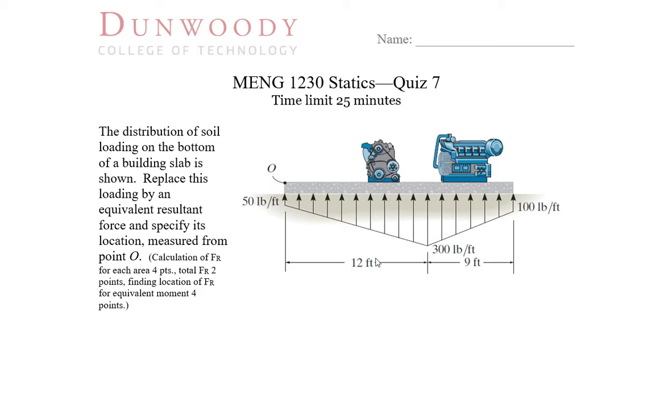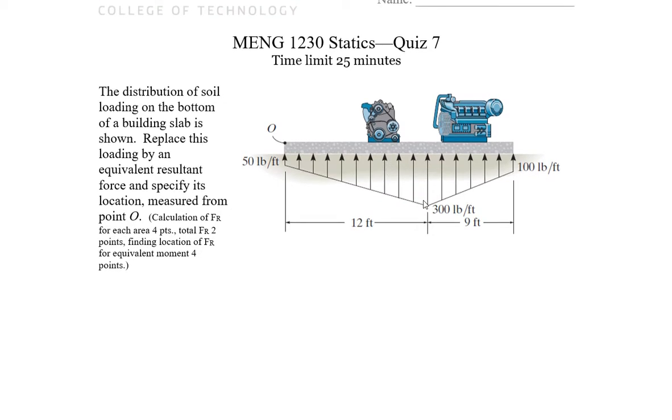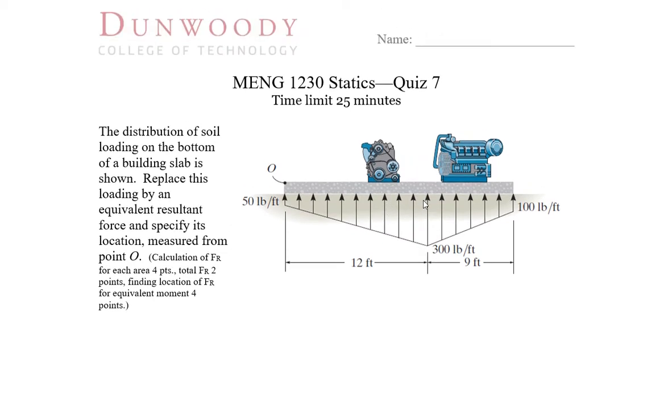We can do this a couple different ways. One way would be to find an equation for this line and find the area between that from this point to this point and use our integration to do that. And then another equation for this line going this direction and find its integration from that point to the end of the slab and add those two together to find our total resultant force. Again, do our moments and find the location for that.